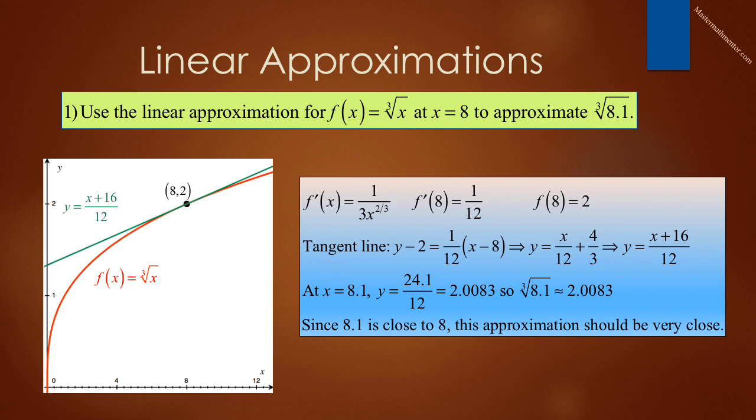So, the green line has equation y equals x plus 16 over 12. And therefore, at x is equal to 8.1, our approximation is y equals 24.1 over 12, which is 2.0083. So, our approximation of the cube root of 8.1 is 2.0083 because 8.1 is very close to 8.